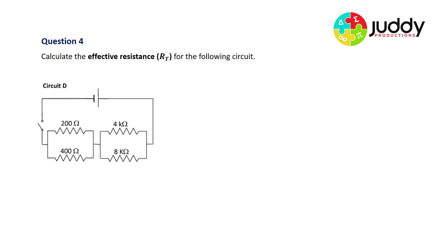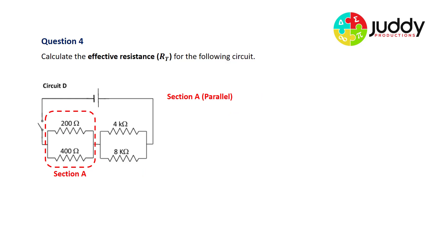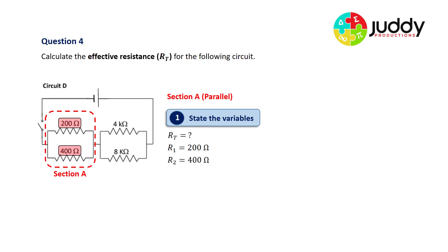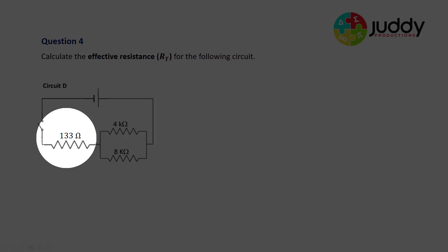Question four: calculate the effective resistance RT for the following circuit. This is a combination circuit — there are two parallel sections in series. Section A is in parallel and section B is in parallel. For section A: R1 is 200 ohms and R2 is 400 ohms, connected in parallel. Using the parallel equation and substituting, we get a total or effective resistance for section A of 133 ohms. That parallel section is replaced by a single resistor of 133 ohms in circuit D.